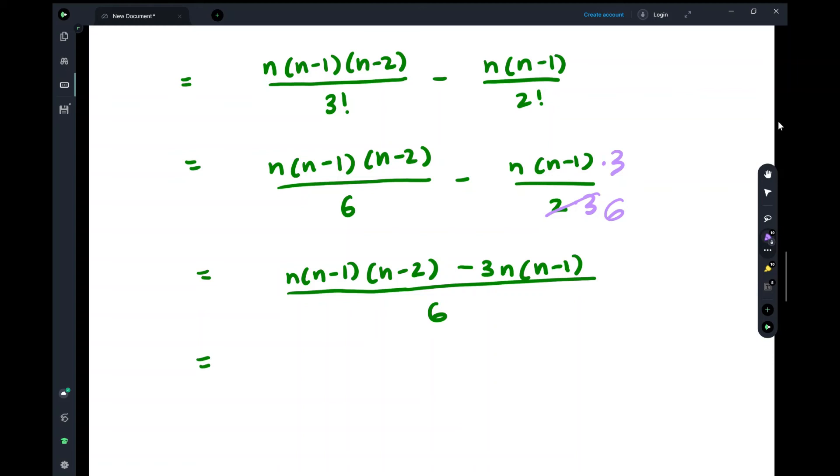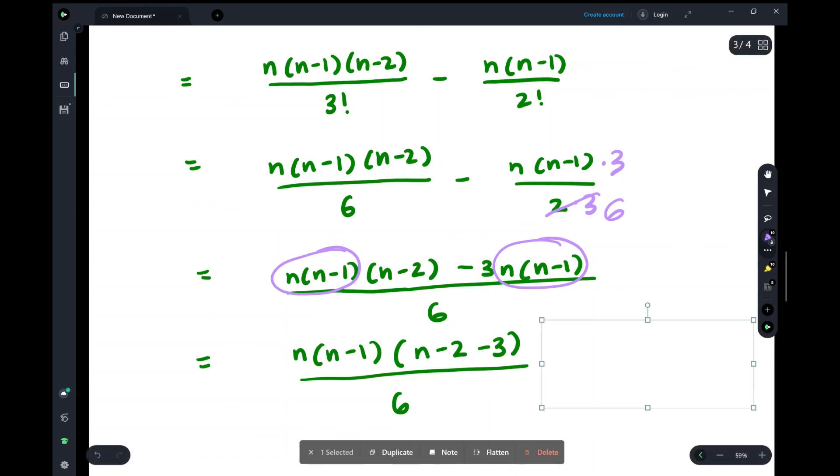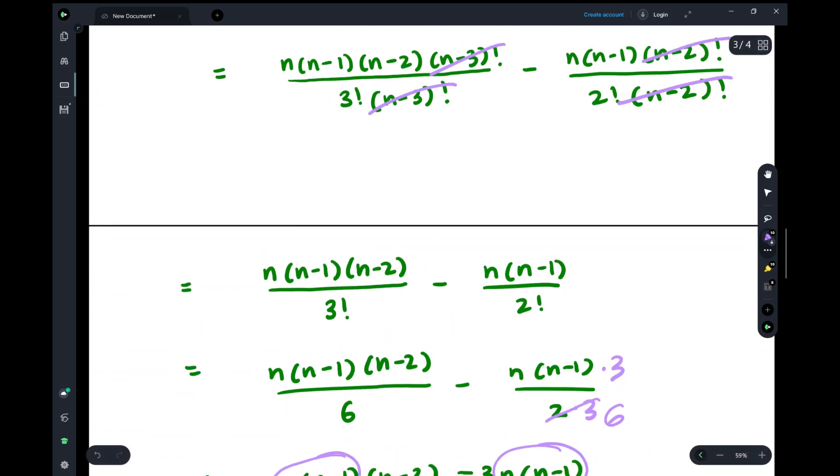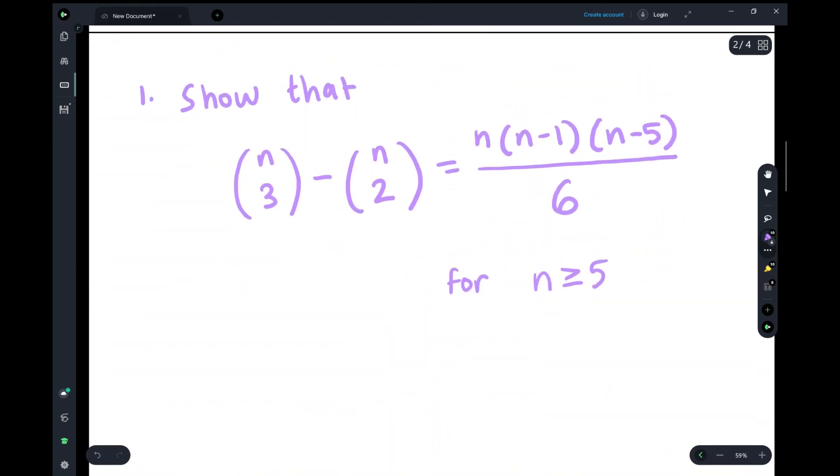Just noticing that we have n times (n minus 1) here and n times (n minus 1) here, we can factor that out. We get n times (n minus 1) times (n minus 2 minus 3). We can further simplify this by finishing up, which gives us n times (n minus 1) times (n minus 5) over 6. So if we go back to our problem, that's exactly what the problem wanted us to show: n times (n minus 1) times (n minus 5) over 6.